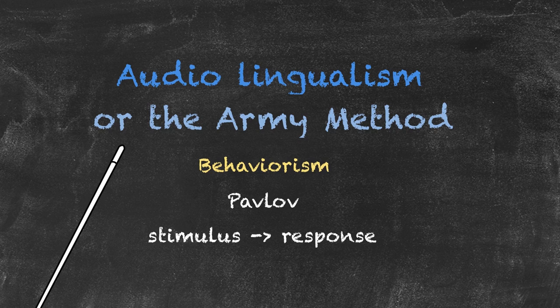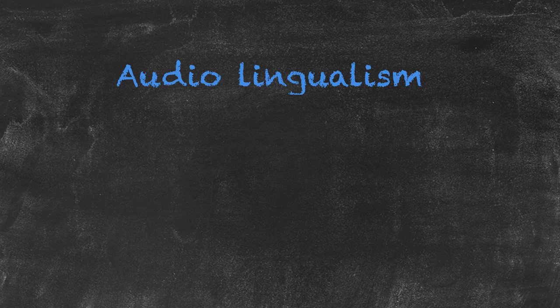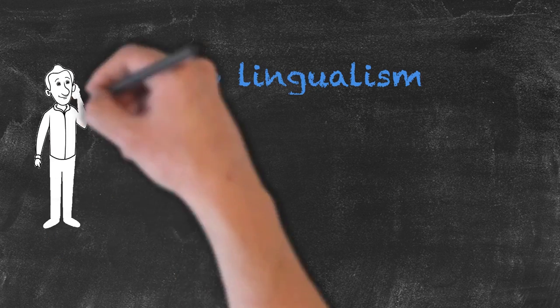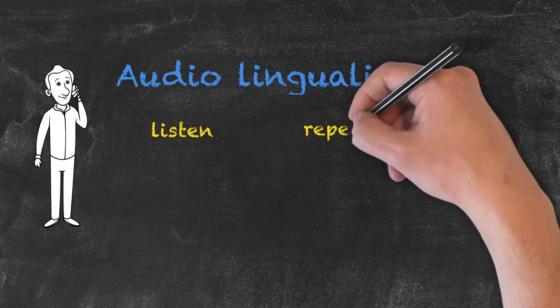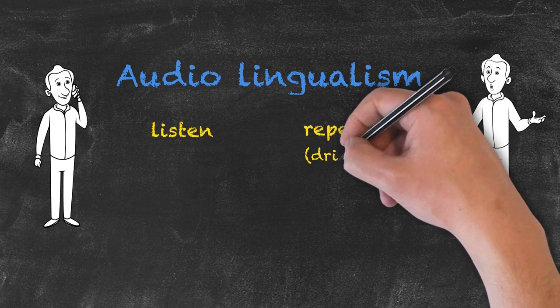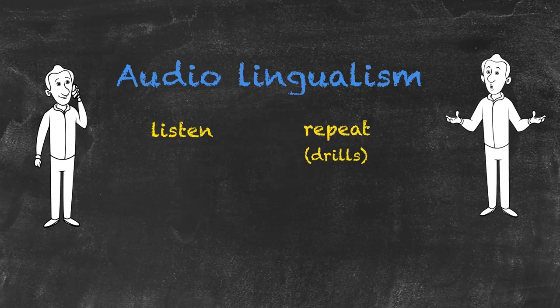In the audio-lingualism method, these two parts of the name tell us what actually happens. Audio is to listen and lingual is to repeat. So what we do is a series of drills, and these intensive verbal drills help us to get a use of the particular language.